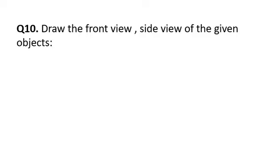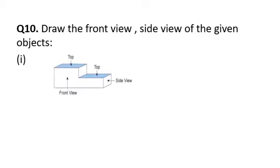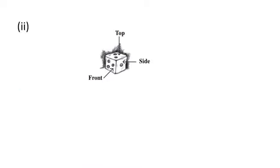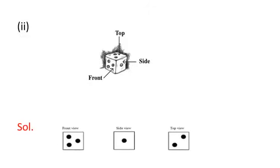The last question asks you to draw the front view, side view, and top view of given objects. From the first figure, the top view shows blue rectangles, the front view is clearly visible from the figure, and the side view also shows two rectangles. In the second part, the front view has three dots, the side view has one dot, and the top view has two dots.